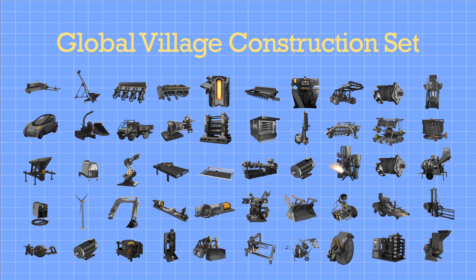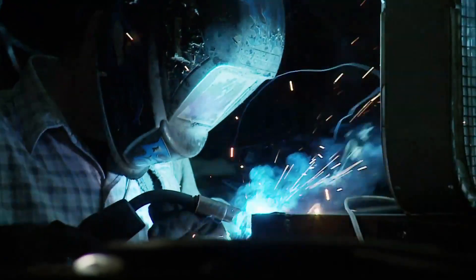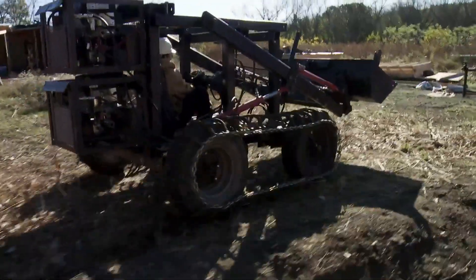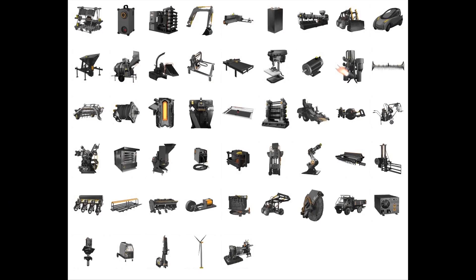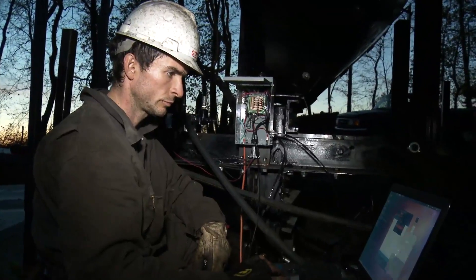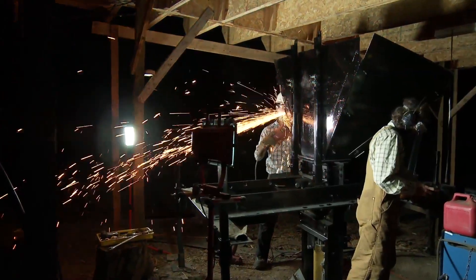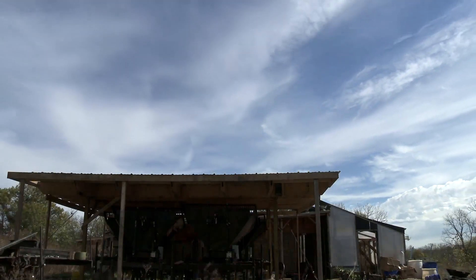We're developing the Global Village Construction Set as a means to show that we can create a real community based on these technologies and achieve post-scarcity. The Global Village Construction Set is a set of 50 different industrial machines that allow for the easy fabrication of all the different products it takes to create a small civilization with modern comforts — everything from a tractor to an oven to a circuit maker.